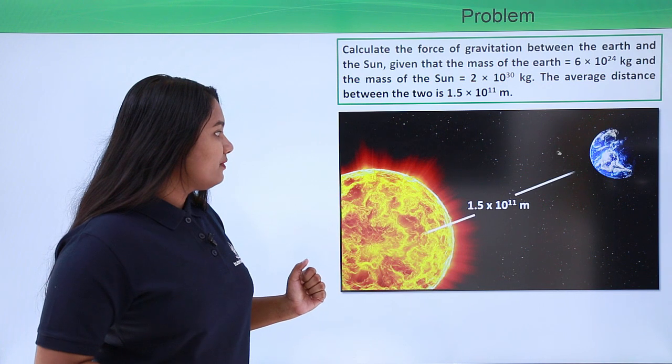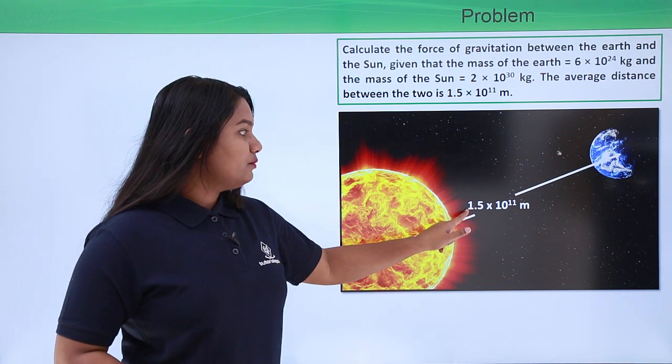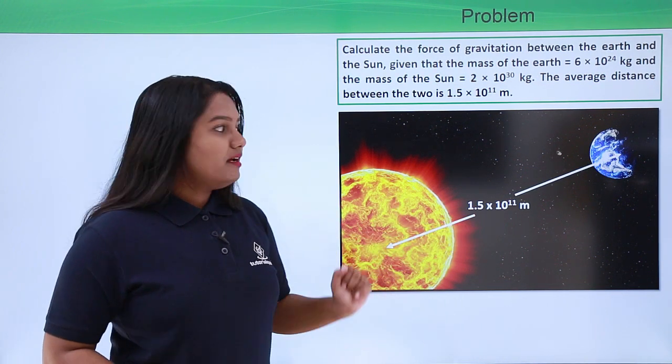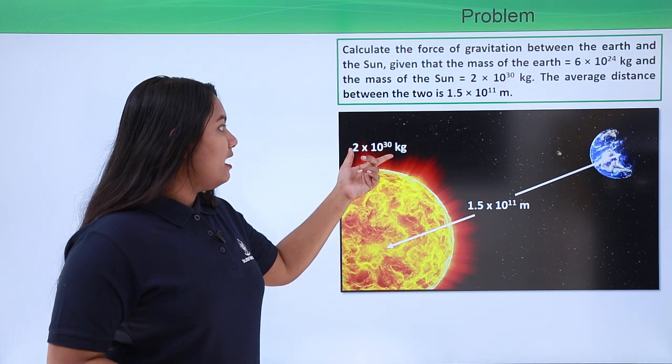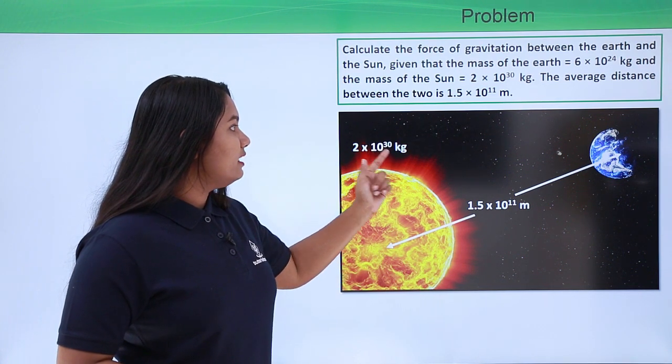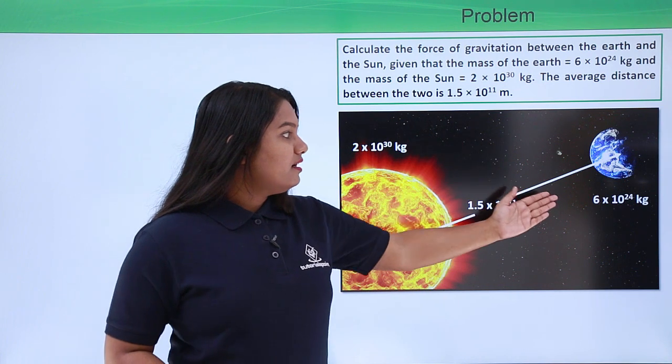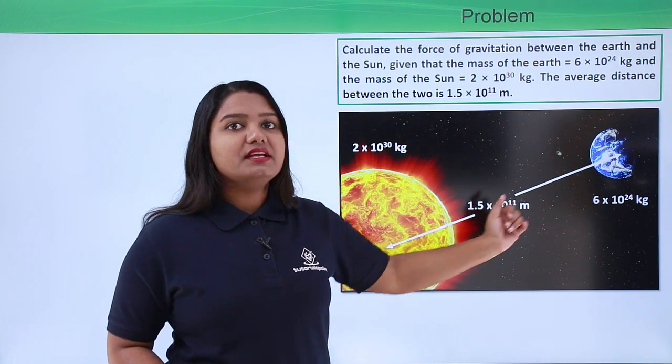The distance between the Sun and the Earth is given to be 1.5 × 10^11 meters, the mass of the Sun is 2 × 10^30 kg, and the mass of the Earth is 6 × 10^24 kg.